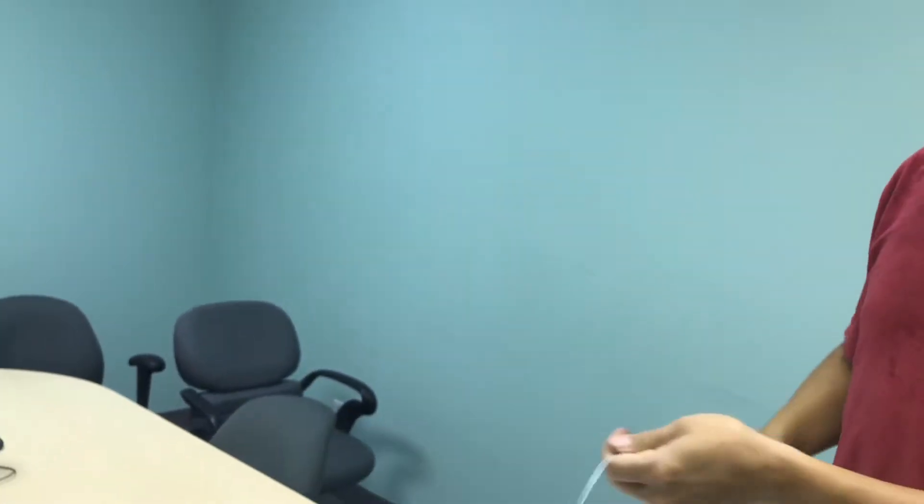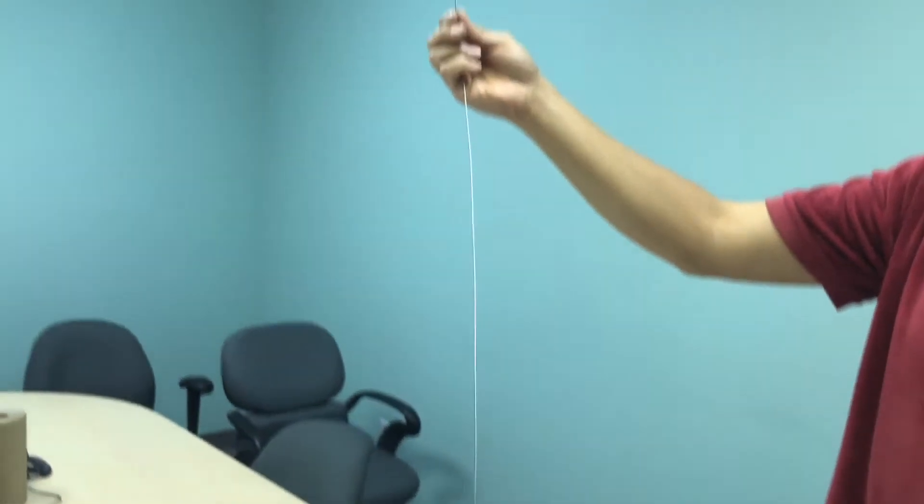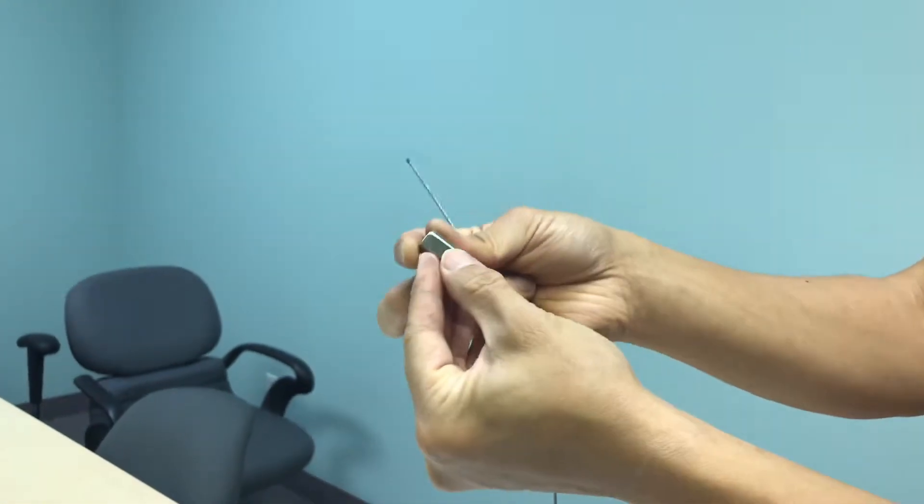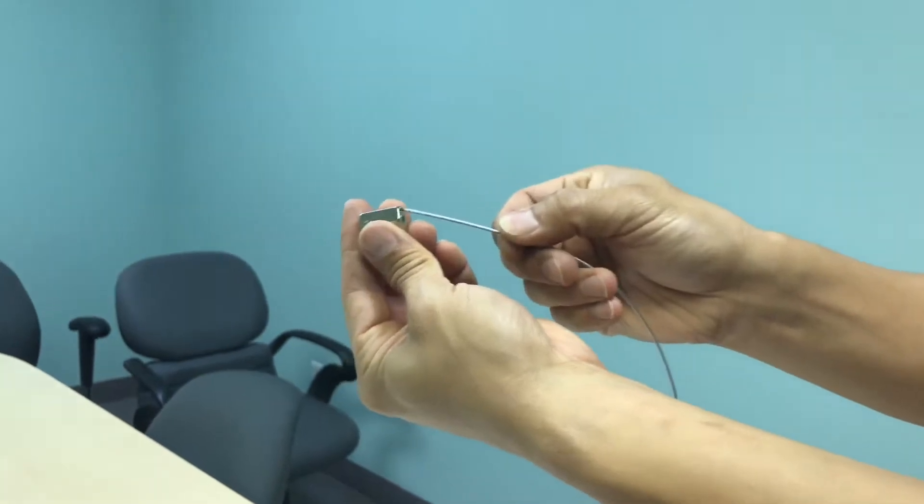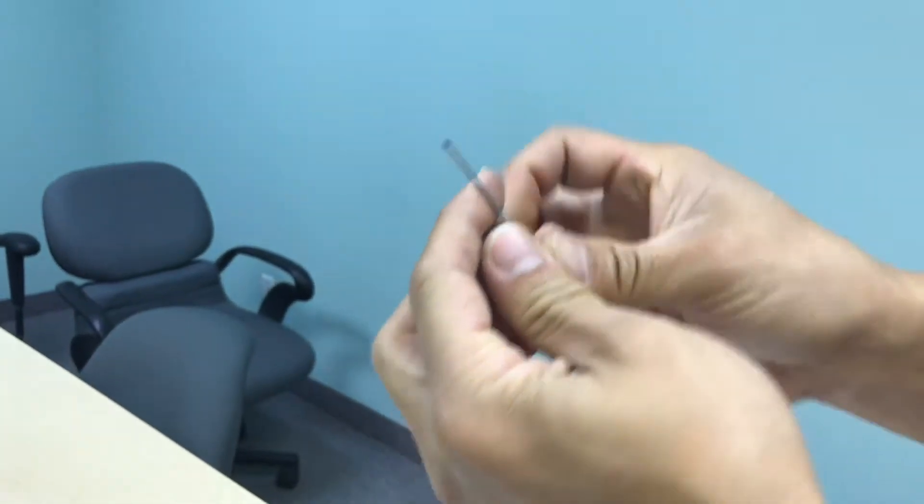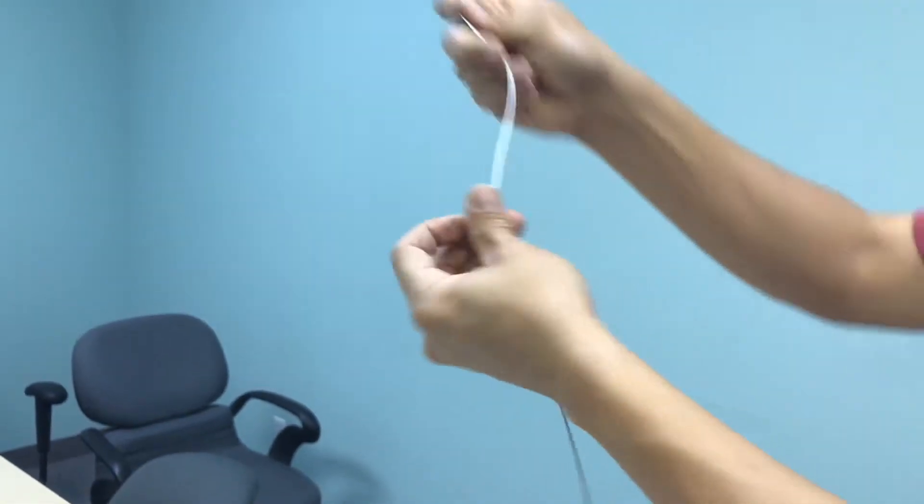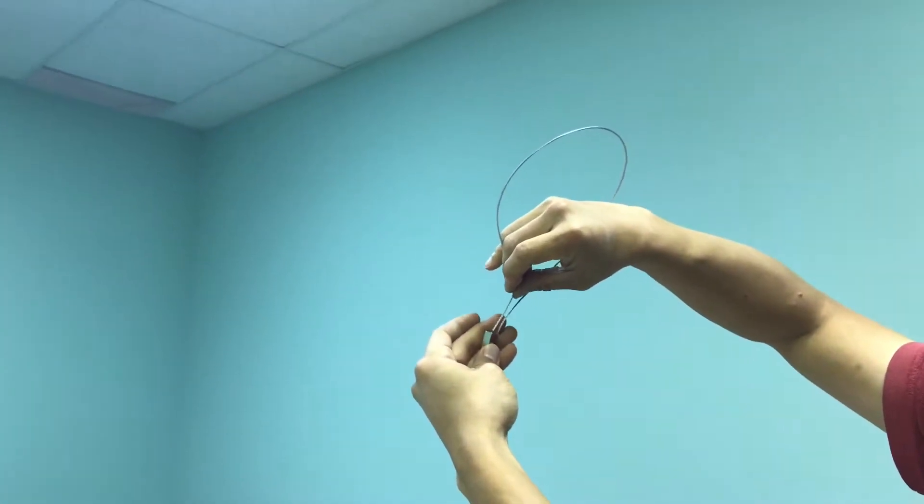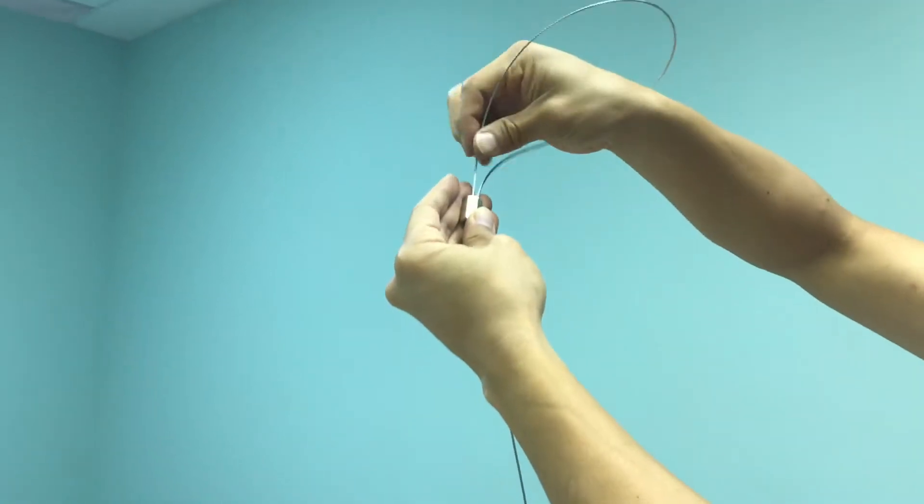And how it would work is on this end, you would take this connector here. There's a little arrow that helps you along. And you feed it through that arrow and around the rafter, through the middle, and then out.